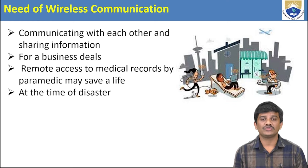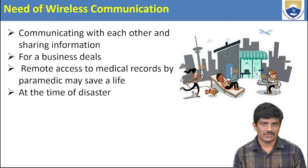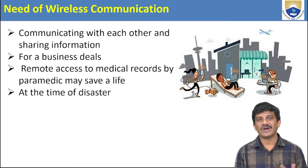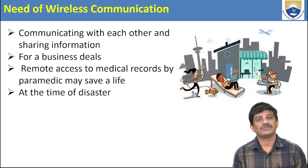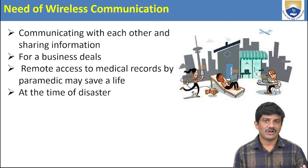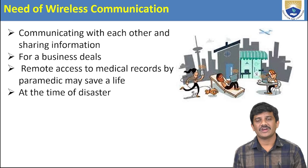If you are using wired communication at the time of a disaster, the connection collapses — the wires are destroyed. With wireless communication, there are no wires between the devices, so we can easily communicate with each other. This is the need of wireless communication.